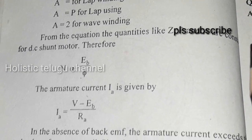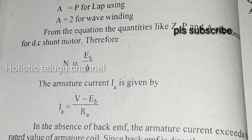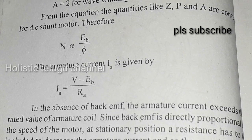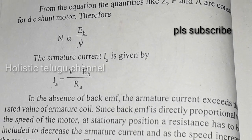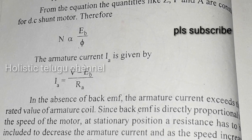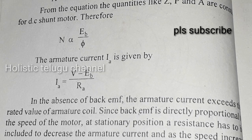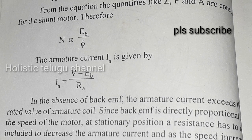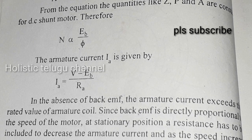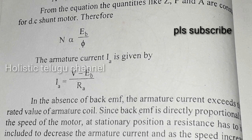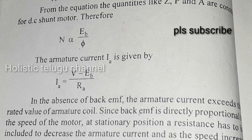The armature current IA equals V minus EB divided by RA. In the absence of back EMF, armature current would exceed the rated value. Since back EMF is directly proportional to speed, at stationary position a resistance must be included to limit armature current. As speed increases, the resistance can be cut off since back EMF regulates the magnitude of armature current.